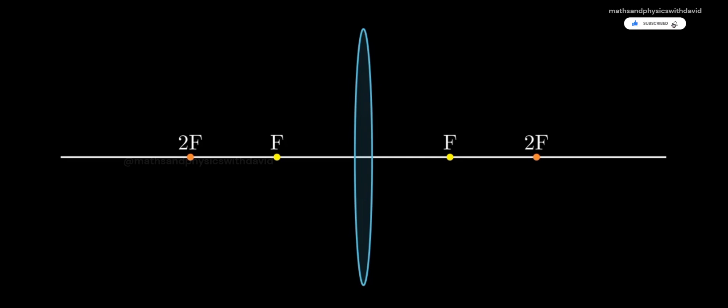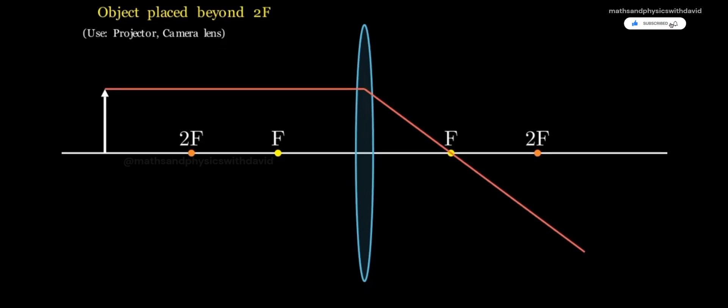Case 1, Object Beyond 2F. From the top of the object, draw one ray parallel to the principal axis. After passing through the lens, it goes through the focus.